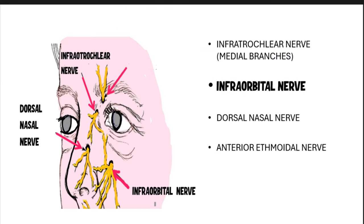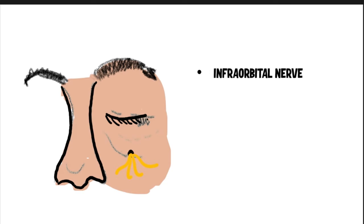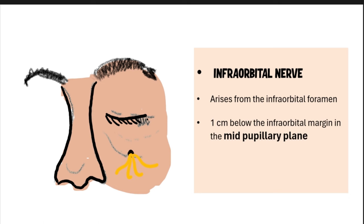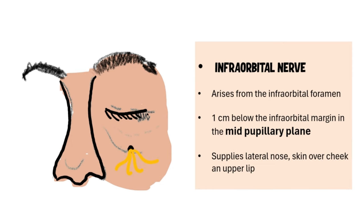The next nerve to discuss is the infraorbital nerve, which originates from the infraorbital foramen, providing innervation to the lateral nose, skin over the cheek, and upper lip. To block this nerve, one needs to palpate the infraorbital margin. The injection is then applied just below the infraorbital margin, specifically 1 cm below the margin in the mid-pupillary plane.